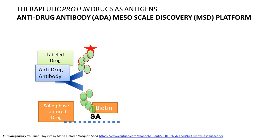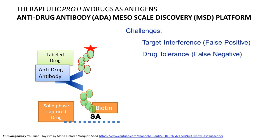What are the many challenges, and why are we talking about validating these assays? When you get false positives or false negatives, what's happening? It seems like a seemingly simple idea, but it's not that easy. The major challenges are what we call target interference, which can lead to false positive results, and drug tolerance, which can lead to false negative results.